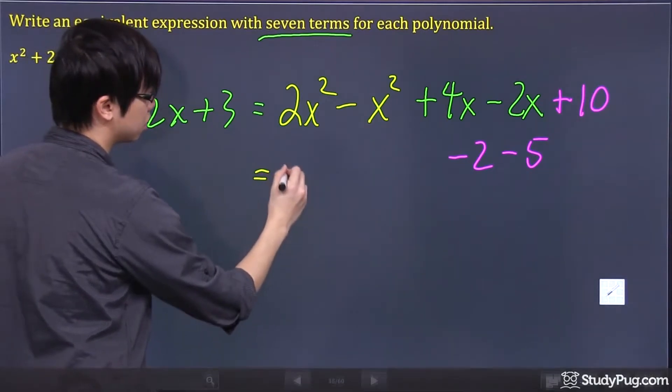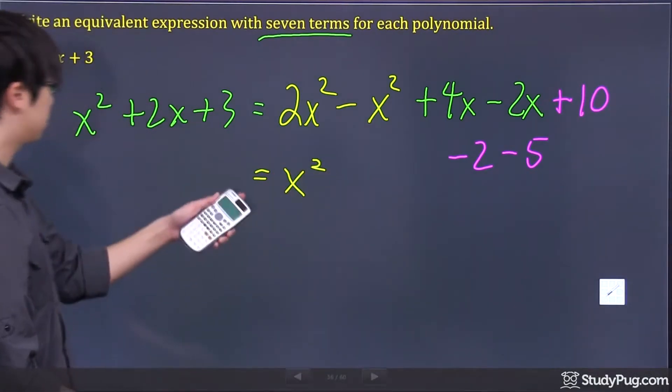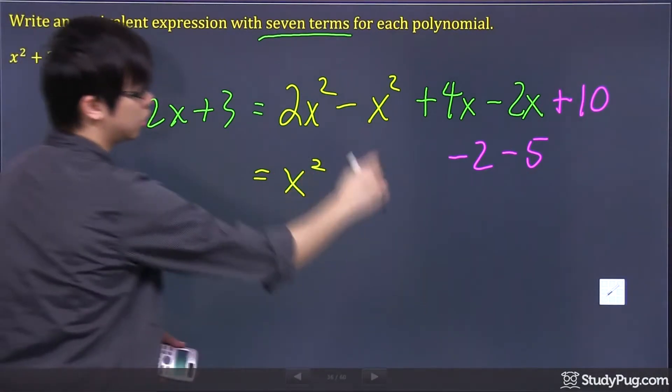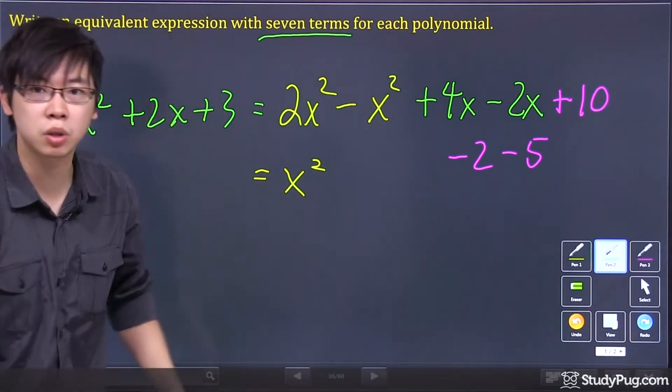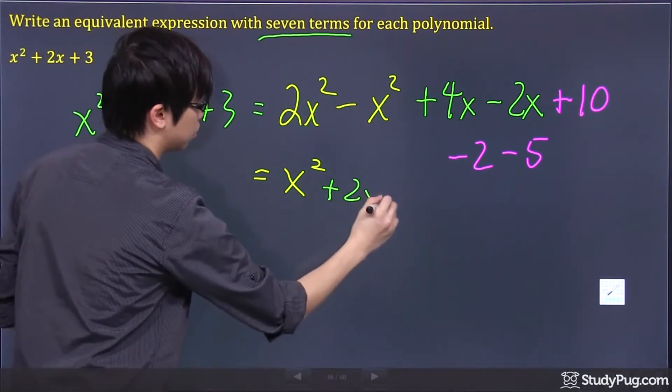2x squared minus x squared is x squared. See? They are the same so far. Take the green one again. So the green one, we have 4x minus 2x. So it's plus 2x.